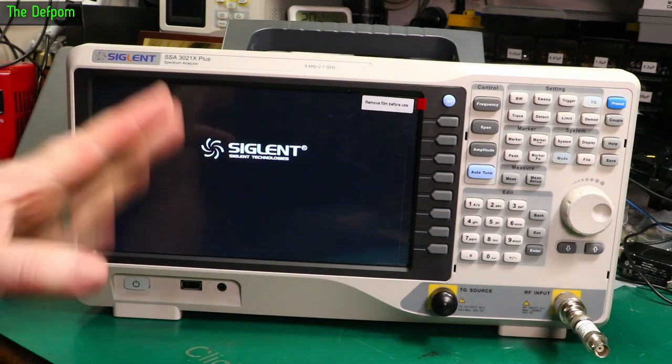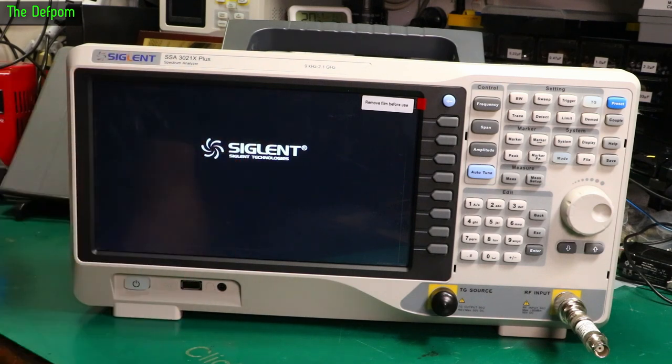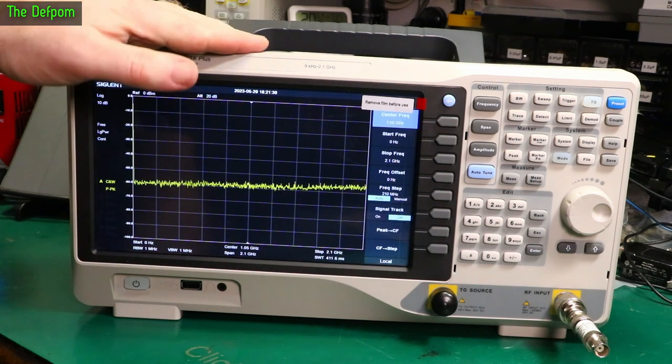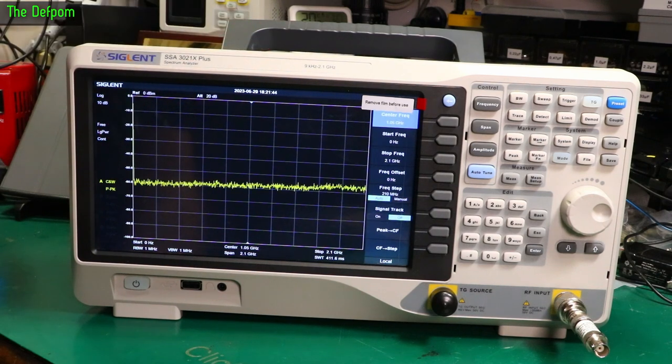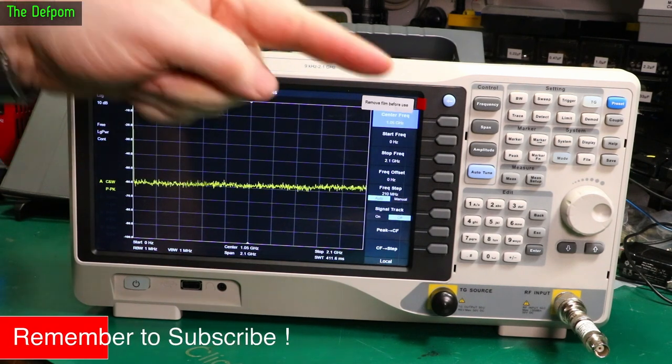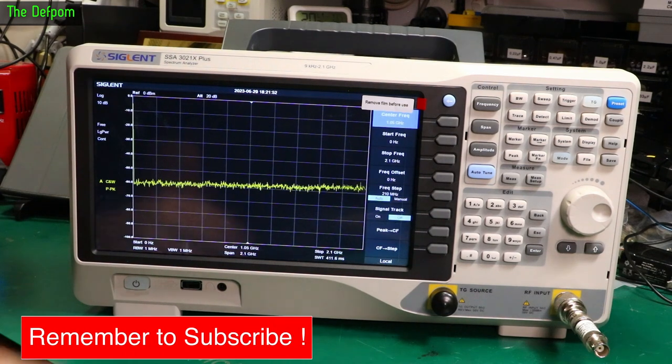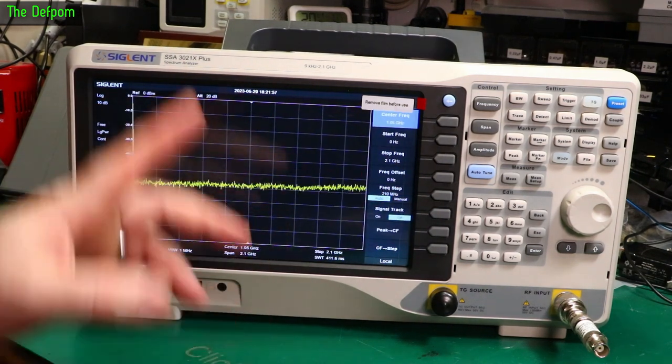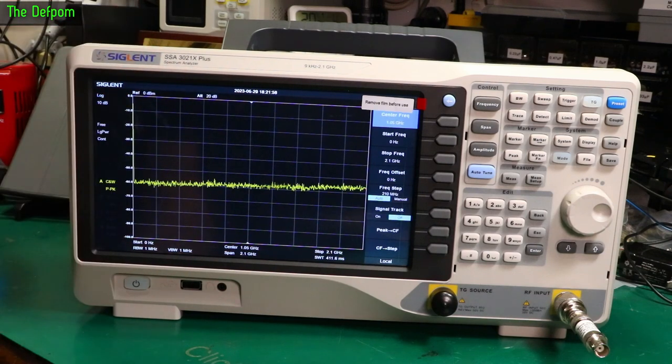So I was actually quite torn between getting this and getting the SVA version, the vector network analyzer, because I wasn't quite sure what I was going to do. This is like half the price of the SVA. You know, that's the major incentive there is that I could afford this, couldn't afford the SVA. I've still got a lot of learning to do on these because I've been using old spectrum analyzers. Now the CMU200, which is quite limited in some ways. I wanted to get something more modern.